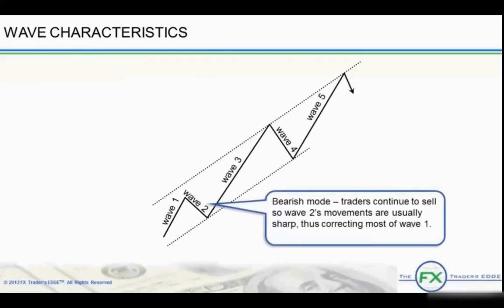Once the first wave has finished, we anticipate a second wave in the opposite direction. Second waves are created by new selling in an uptrend or buying in a downtrend because traders who are selling in an uptrend do not recognize that this up move is a wave one in a new direction. These traders believe wave one is simply another correction in a continuing down move, so they sell at the top of wave one. Wave two moves are usually sharp as a result, correcting most of wave one.